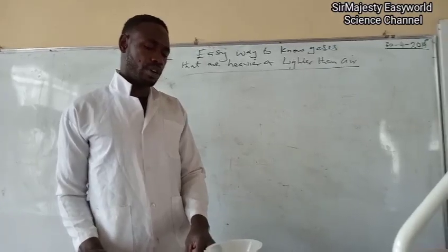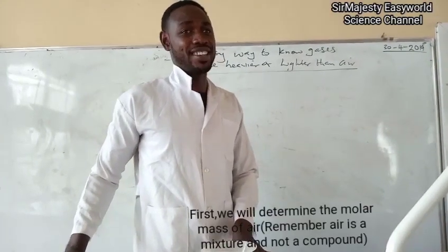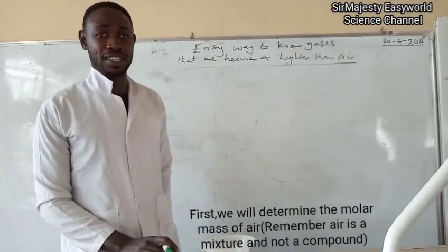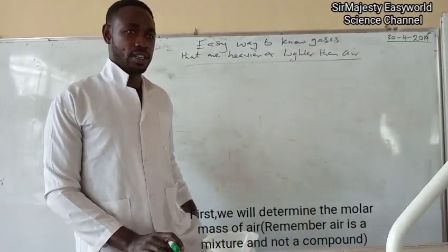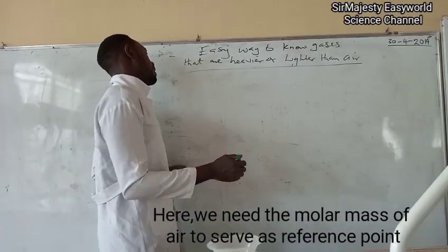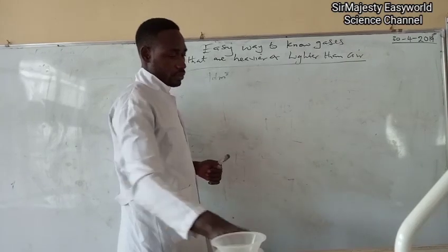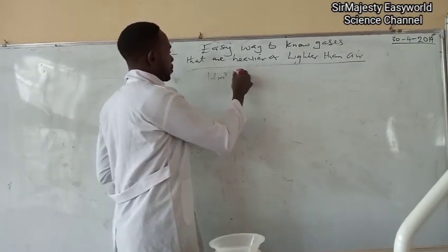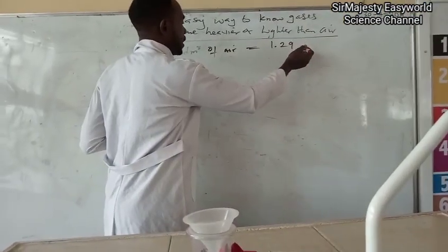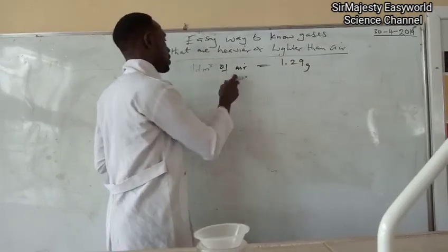So in this video, we'll be comparing the weight of air and that of gases. In this case, we need to know the molar mass of air. Before that, we have to know the density of air because from the density, we can determine the mass. So from experiments, one dm³ of air, that is one liter, have a density of 1.29, that the mass is 1.29 gram for one dm³ of air. So the density of air is 1.29 gram per dm³.